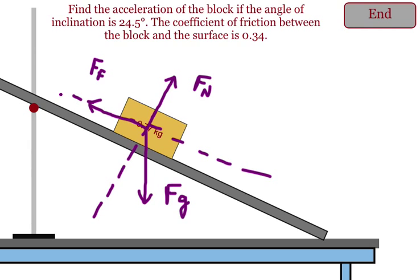And then what we need to do is take our force of gravity and break it up into two components. One component that is parallel to the incline, and one component that is perpendicular to the incline. The incline is at an angle of 24.5 degrees.